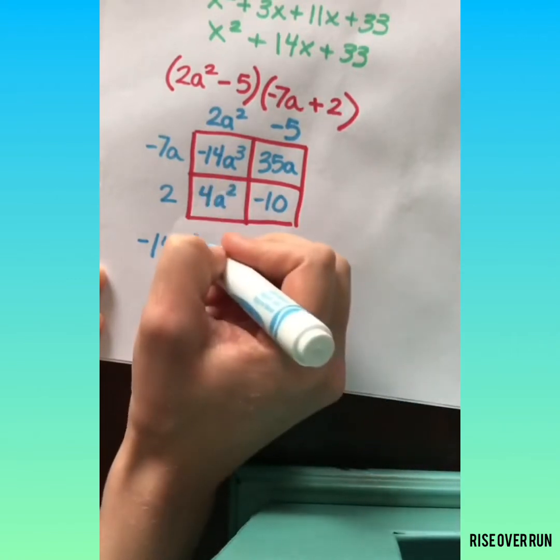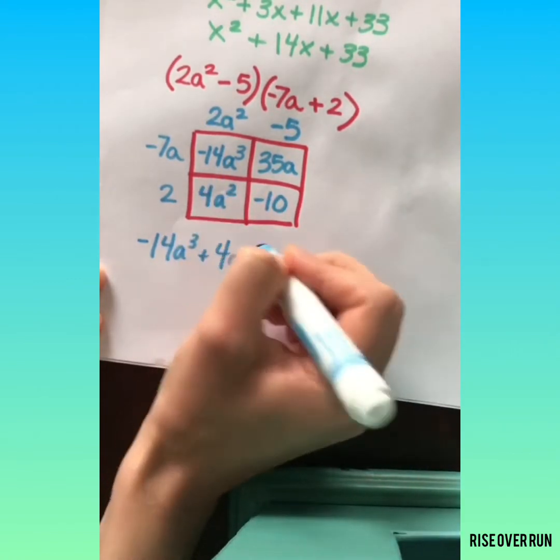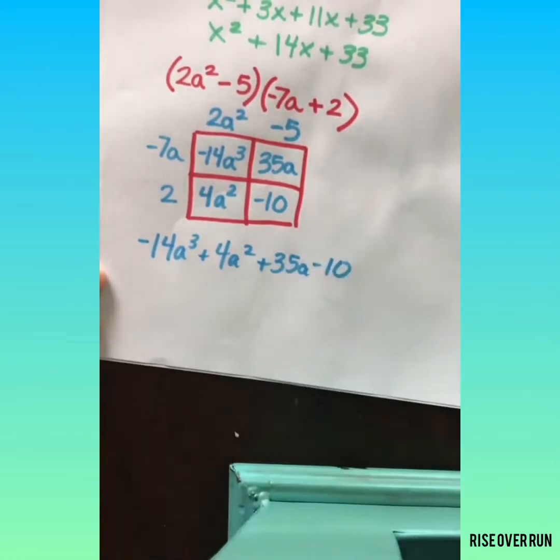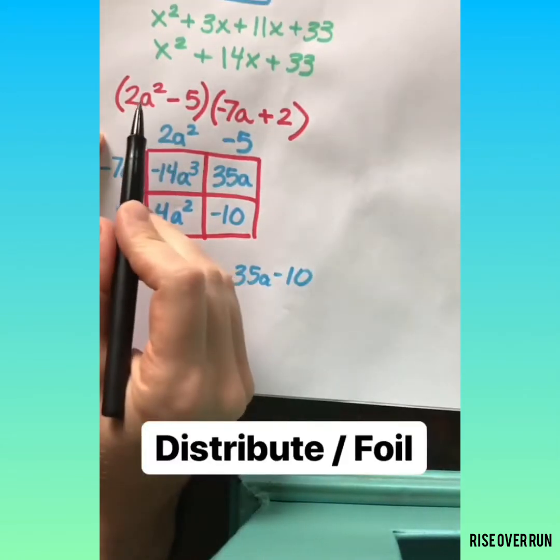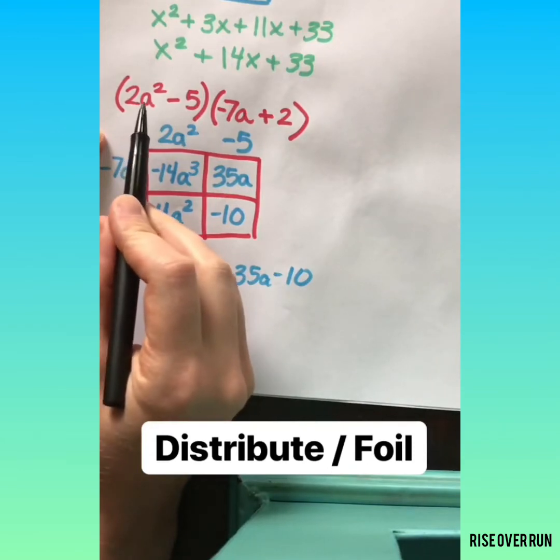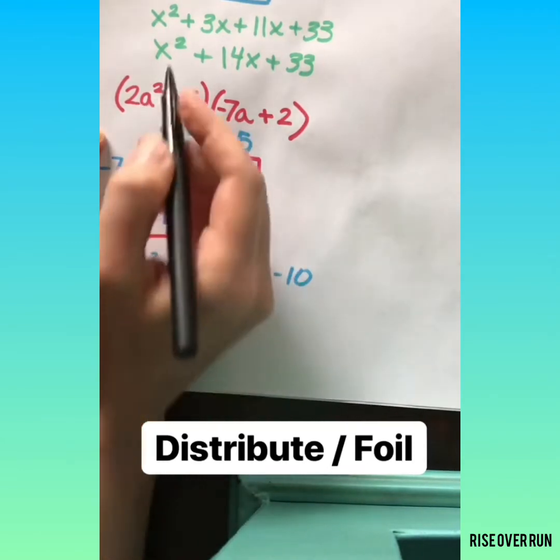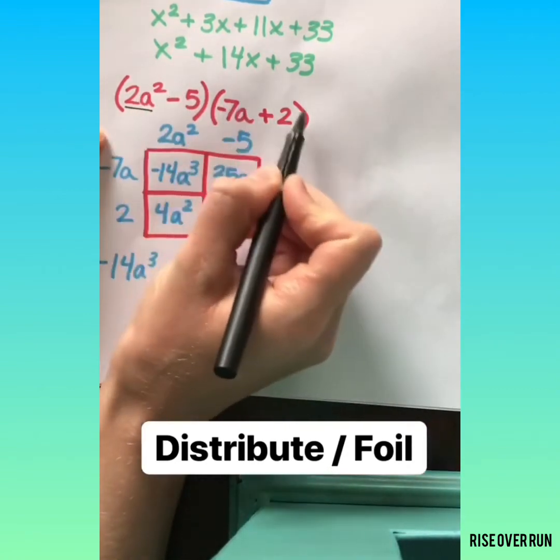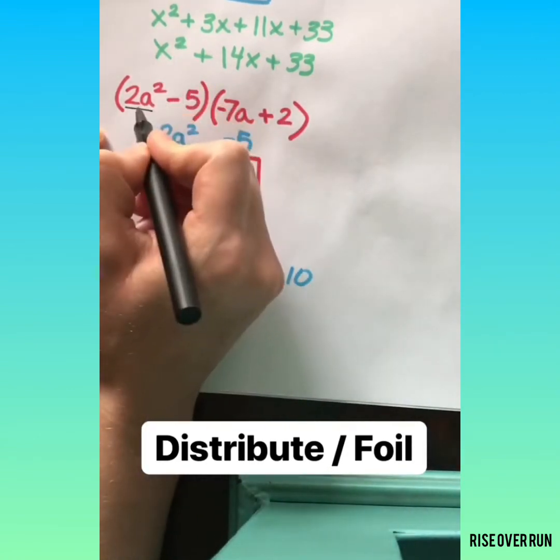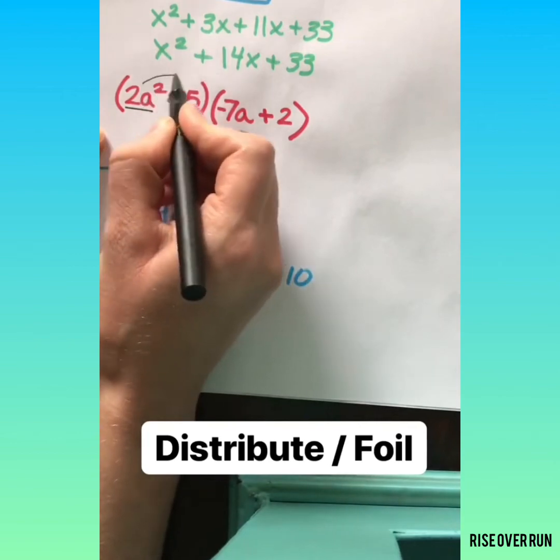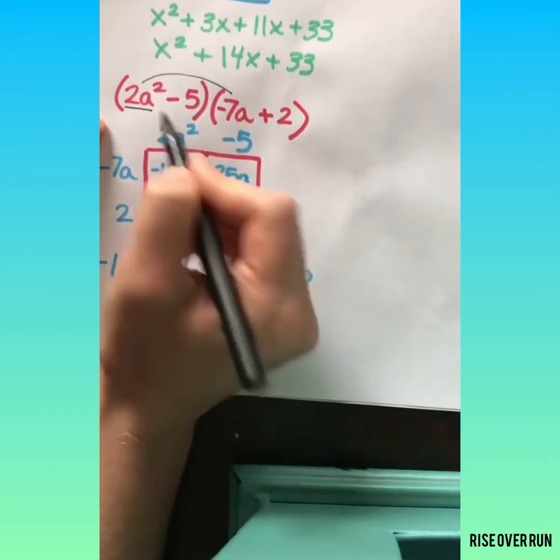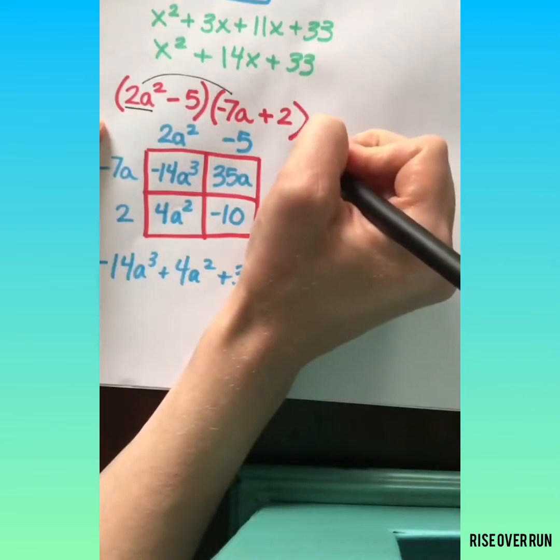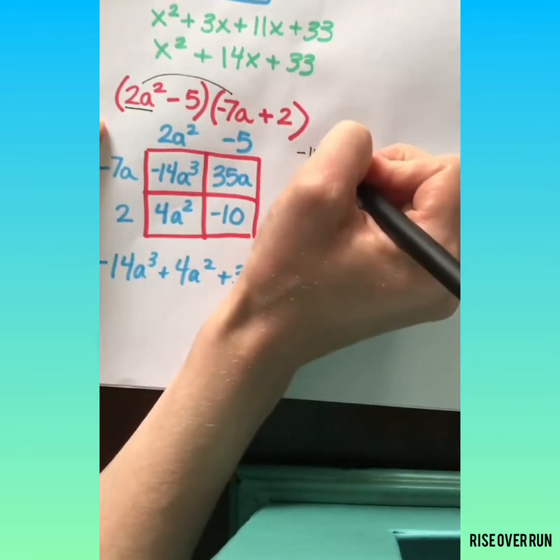You can also use the distributive property or FOIL to multiply these two polynomials. Be sure you start with this first term and multiply everything in the second term. It helps to keep track of this either by drawing lines or underlining as you go. 2a squared times negative 7a is negative 14a cubed.